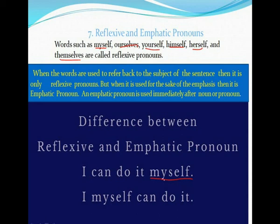And thus it is reflexive. But when we say 'I myself', we are giving emphasis. When it is used for the sake of emphasis, it is an emphatic pronoun, used immediately after the subject. So 'I' is the subject, and 'myself' placed right after it becomes an emphatic pronoun. Here 'myself' in 'I can do it myself' is reflexive, and 'myself' in 'I myself' is emphatic.